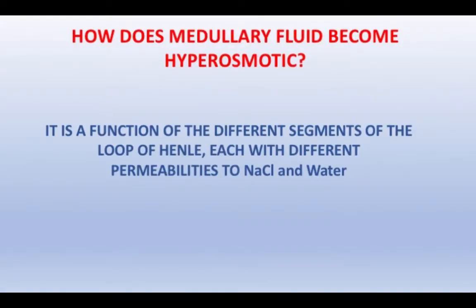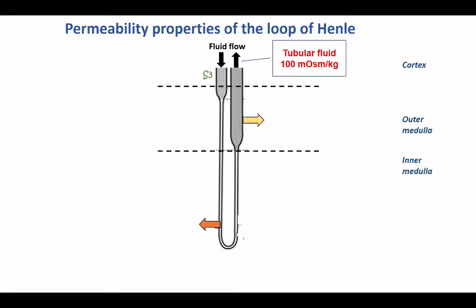With that background, we can now continue with our discussion of the mechanisms that make a hyperosmotic medullary fluid. First of all, it is a function of juxtamedullary nephrons, and in particular it is a function of the fact that the different segments of the loop each have a different permeability to sodium and to water.